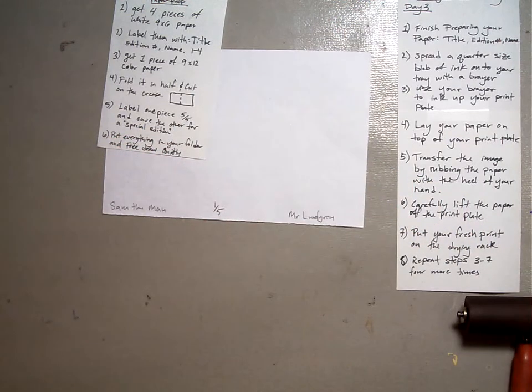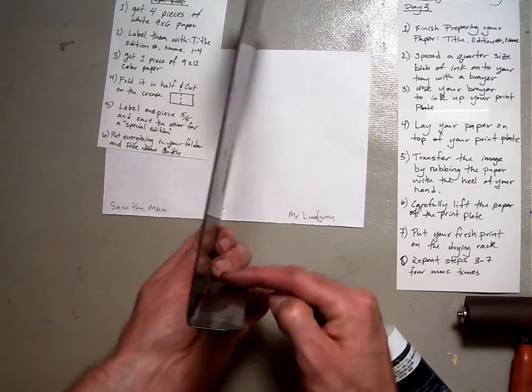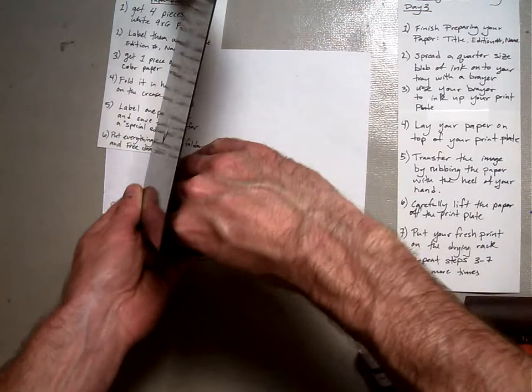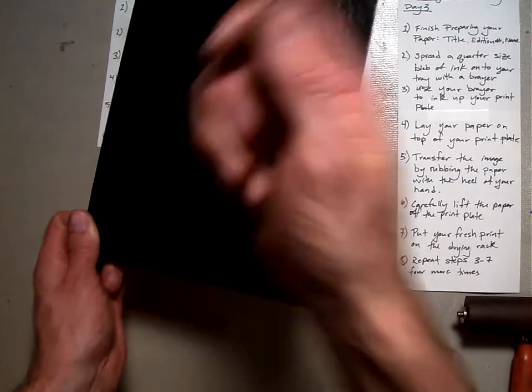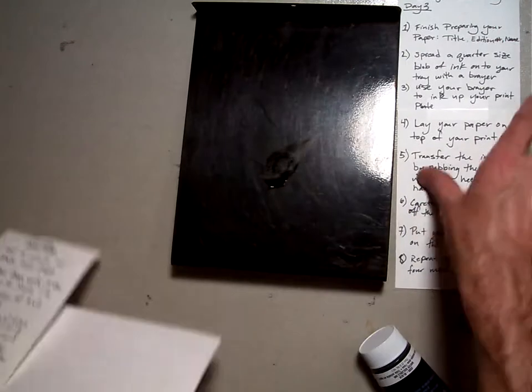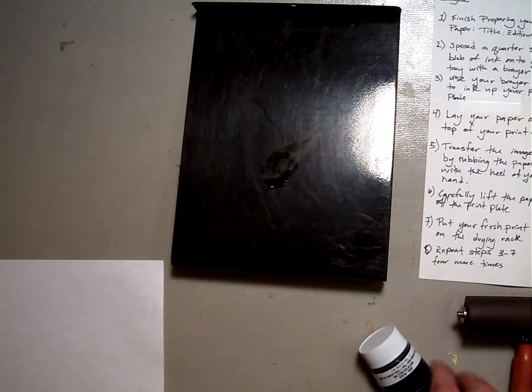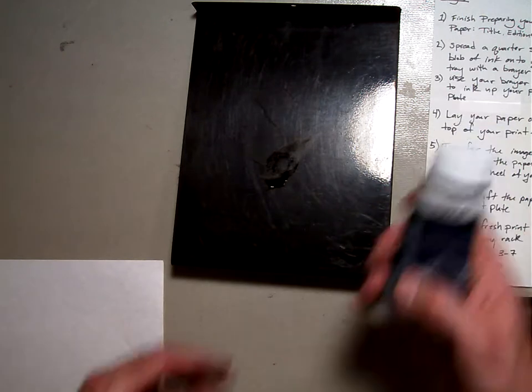You're also going to need an inking tray. This is our inking tray. And you can see it has a hook here that can actually sit on the edge of your table so that as you're rolling, your brayer doesn't roll away from you. I'm going to set mine right here in the view of my camera so you can actually see it.